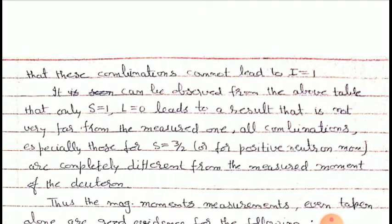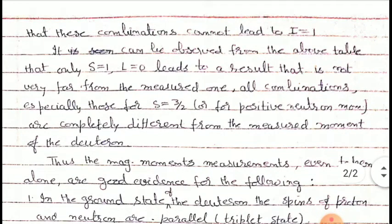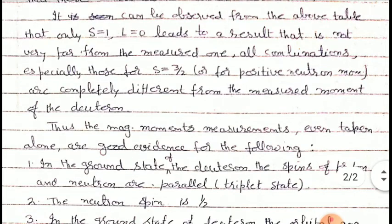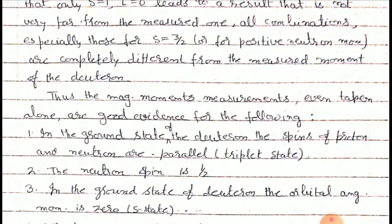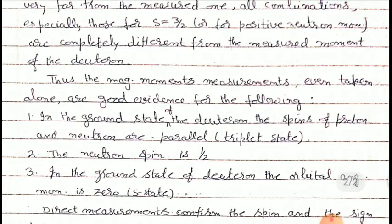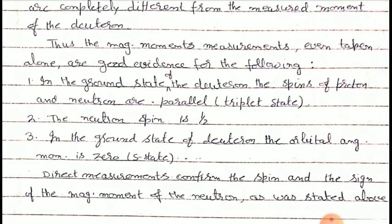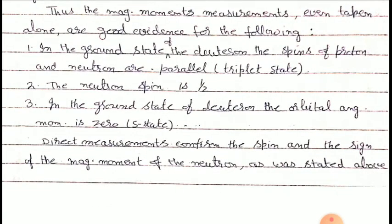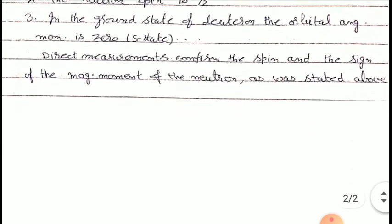All other combinations, especially those for S_n equal to three by two or for positive neutron momentum, are completely different from the measured magnetic moment. Therefore, magnetic moment measurements alone are good evidence for: first, in the ground state of the deuteron, the spins of the proton and neutron are parallel — that is, in the triplet state; second, the neutron spin is certainly half; and third, in the ground state the orbital angular momentum is zero, that is an S state.